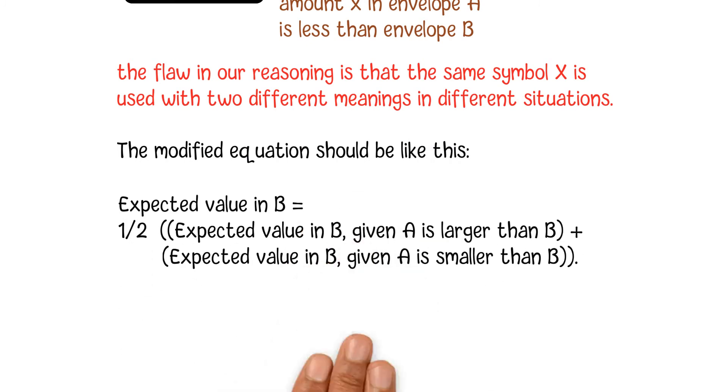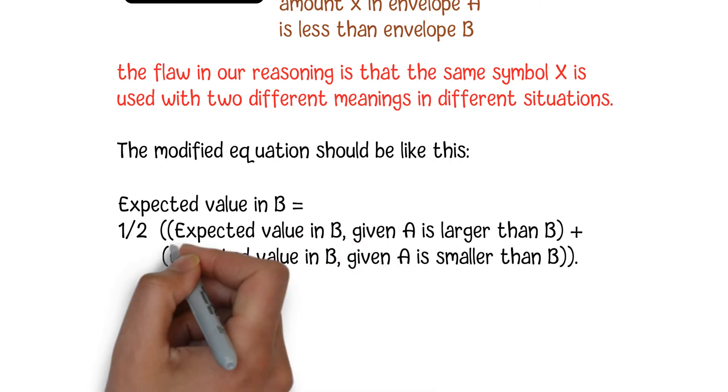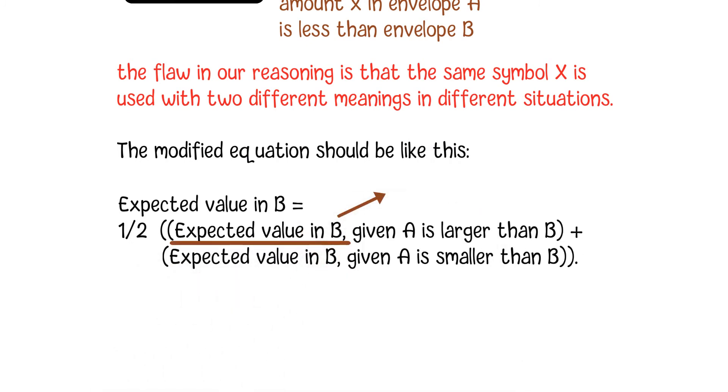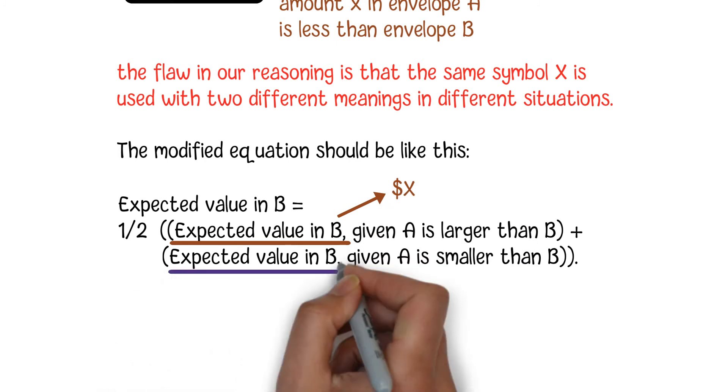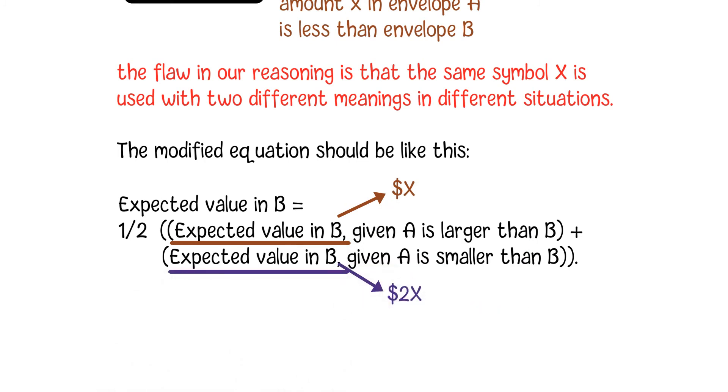If A is larger than B, the expected value in B will be X. If A is less than B, the expected value in B will be 2X. So the final result for this modified equation will be one-half X plus 2X equals 3X/2.